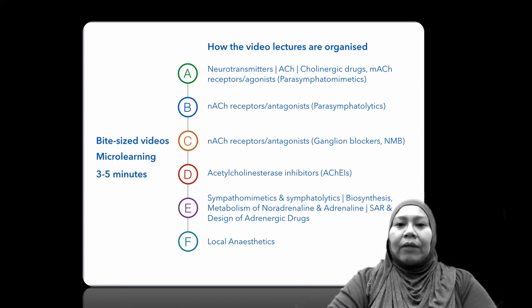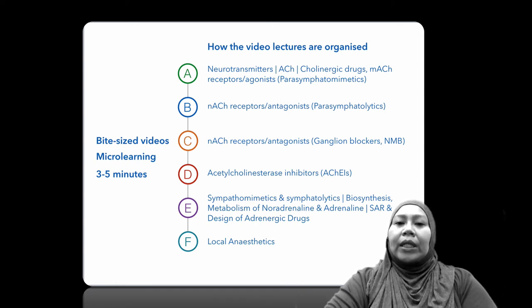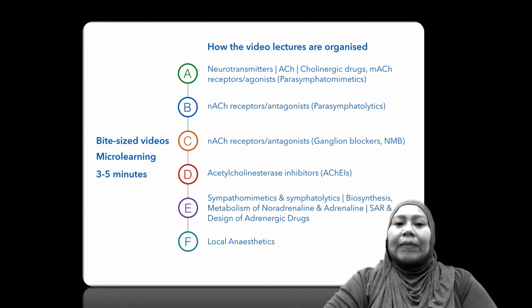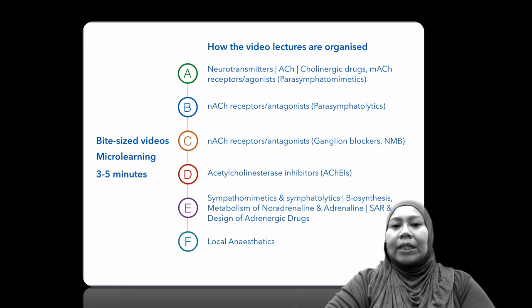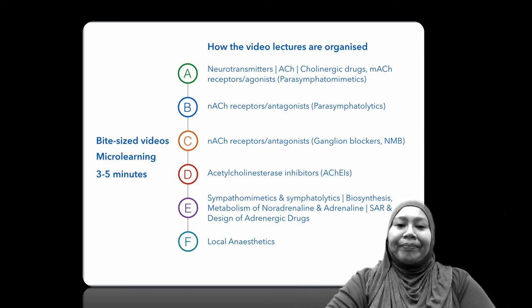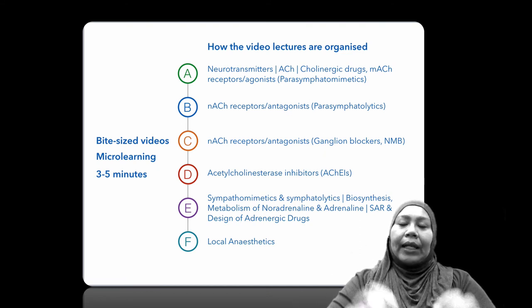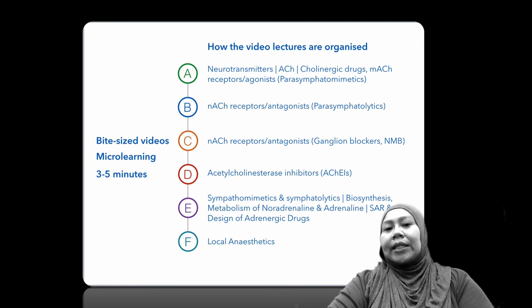The video lectures are organized starting with neurotransmitters and the acetylcholines — the cholinergic drugs (A), followed by the nicotinic acetylcholine receptors or antagonists — the parasympatholytics (B). Then the nicotinic acetylcholine receptor antagonists including ganglion blockers and neuromuscular blockers (C). D covers the acetylcholinesterase inhibitors (AChEI). E is on the adrenergic drugs, and the last video lectures will be on local anesthetics.